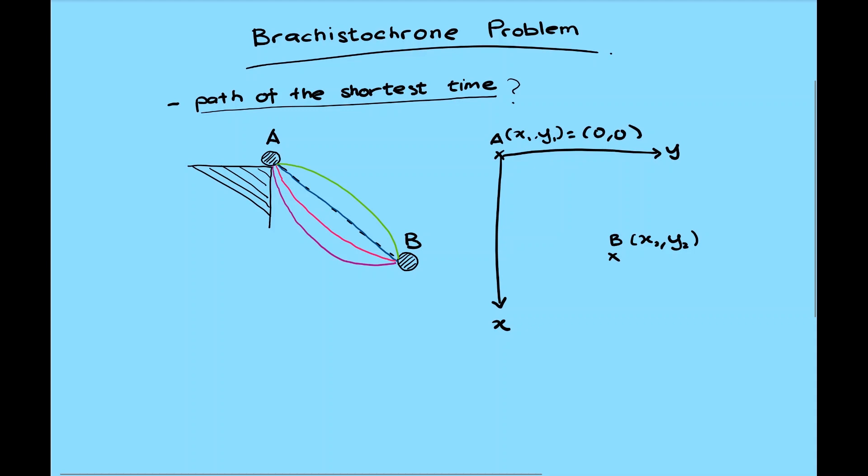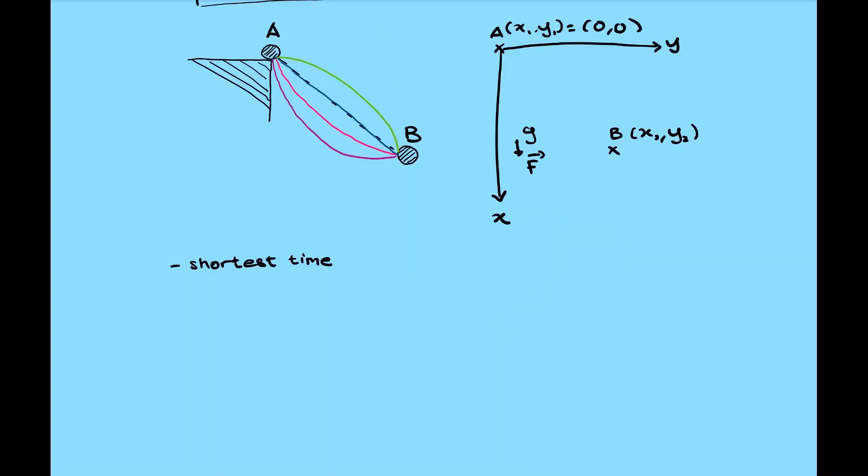The particle is going to slide down under the influence of gravity only, which is also the direction of the force. All other factors, such as friction, resistance, or any sort, are ignored. Back to the problem, we wanted to know the shortest time. Taking from the definition of velocity, v is equal to ds over dt. Therefore, dt is ds over v. Integrate this, we get the definition for t, and we integrate for both sides.